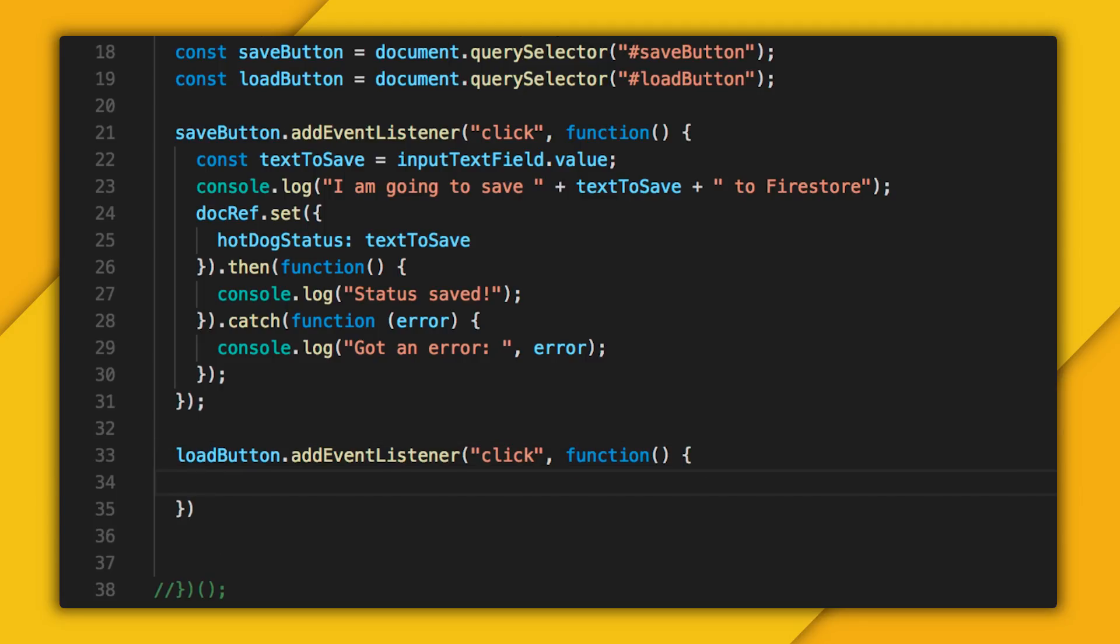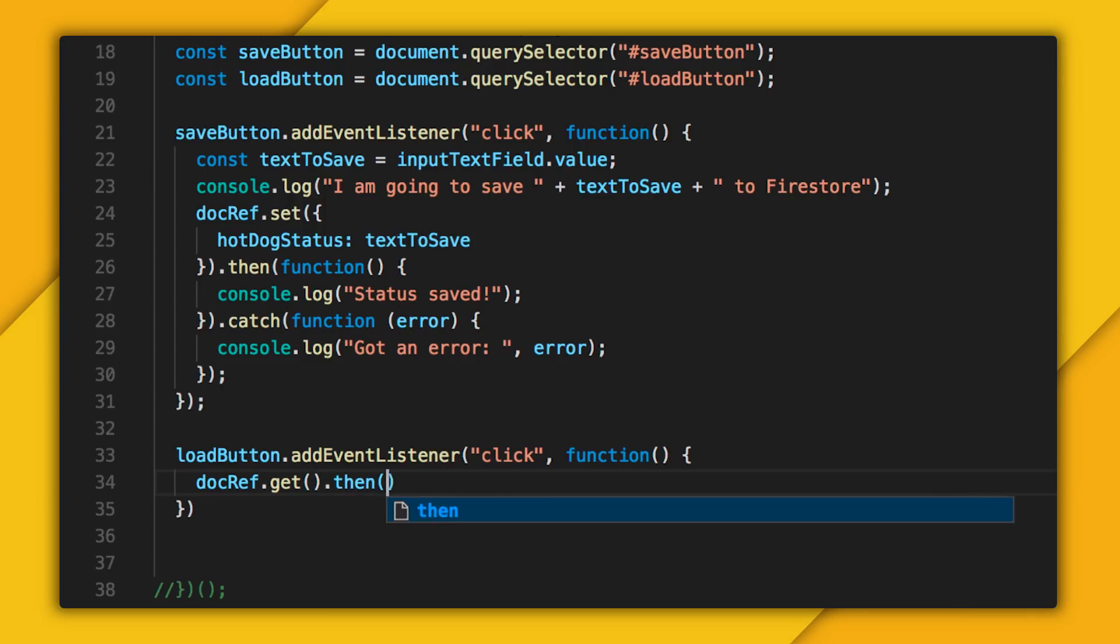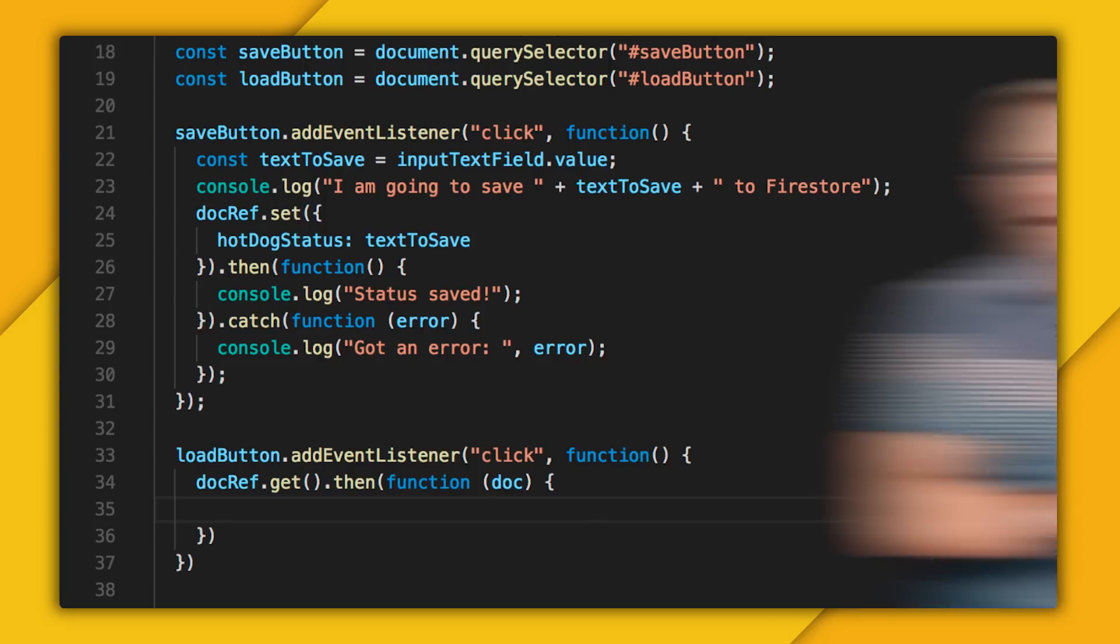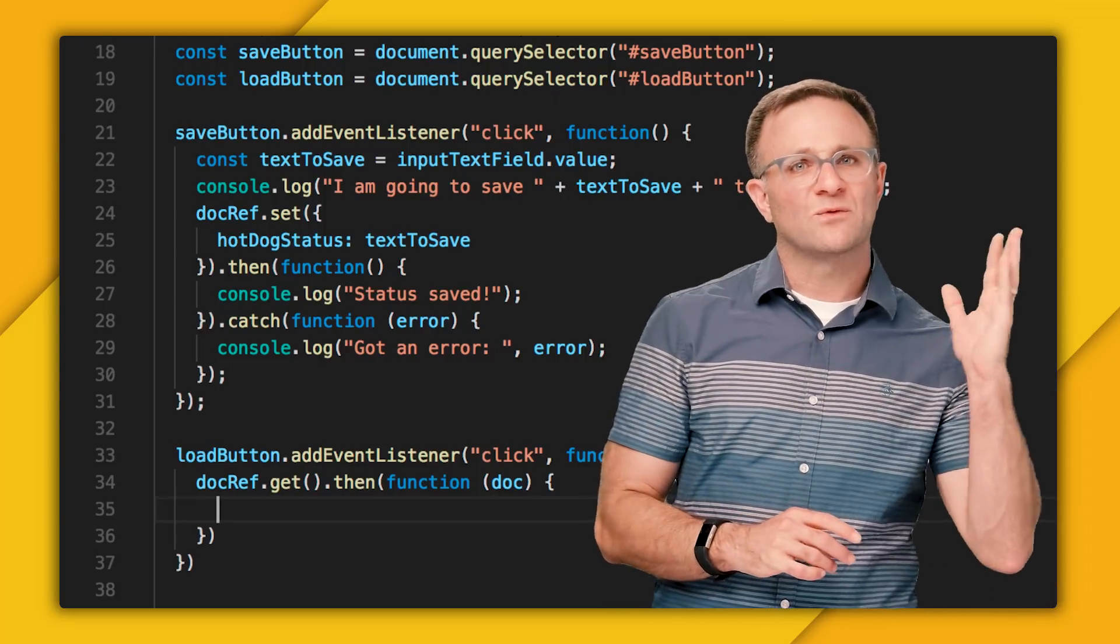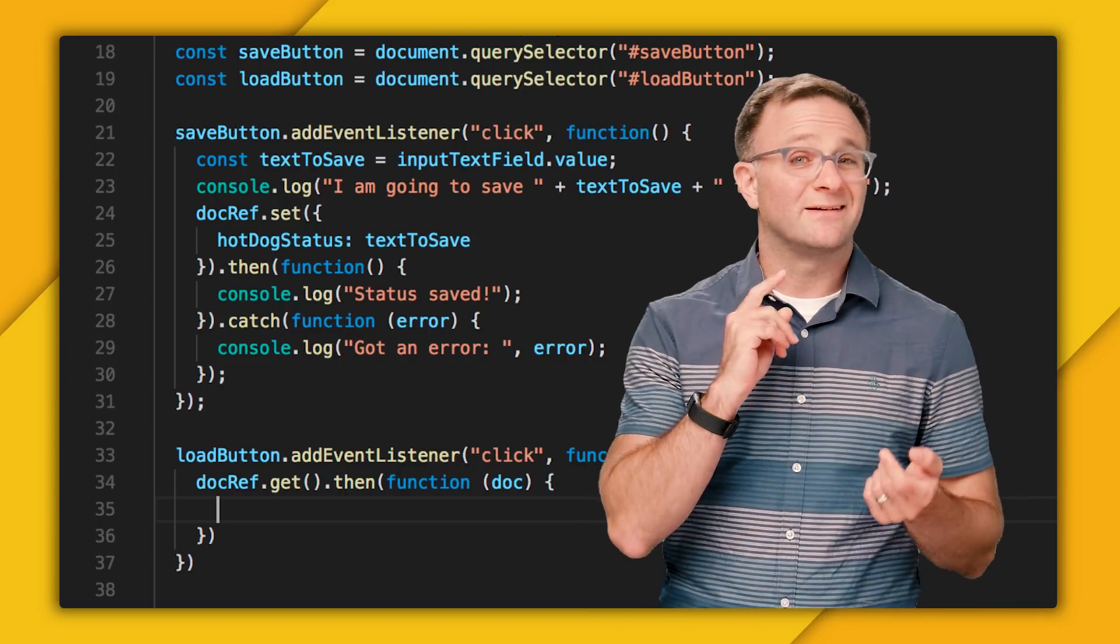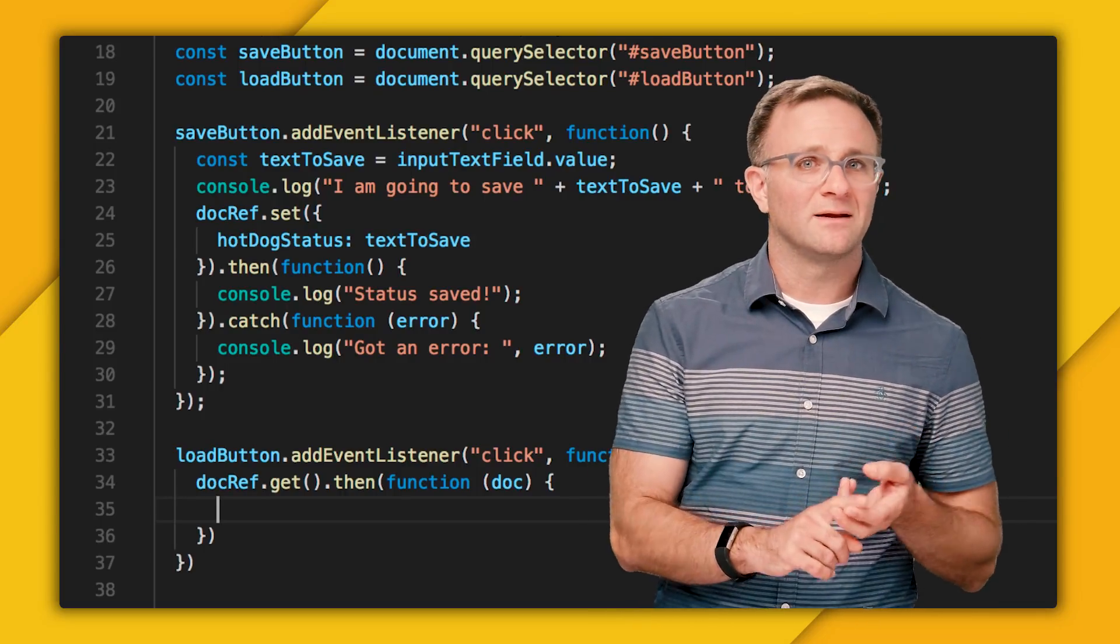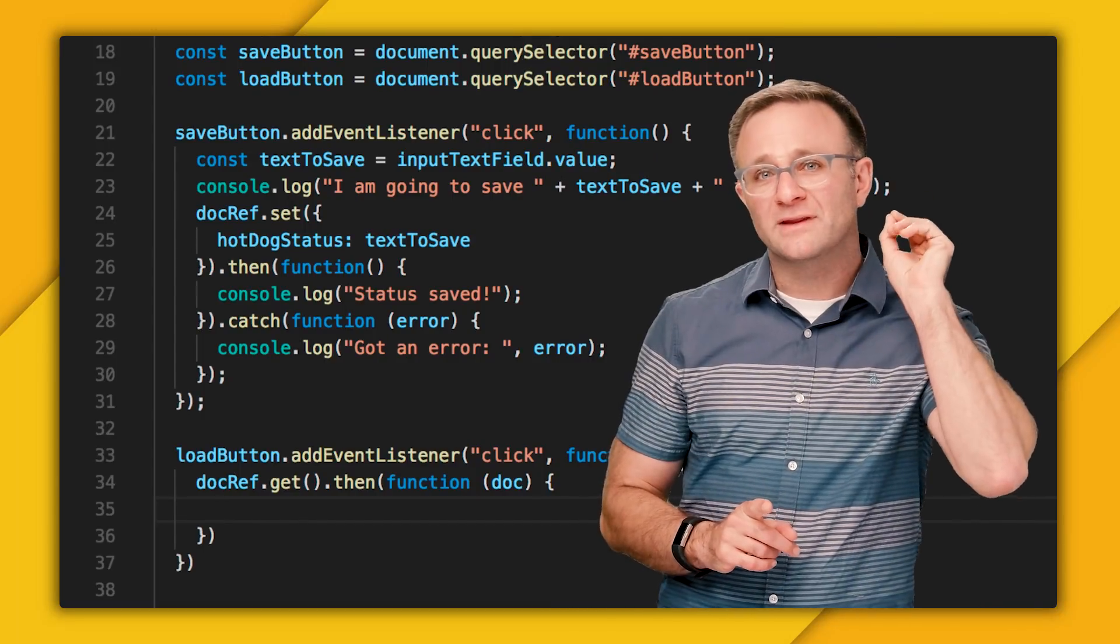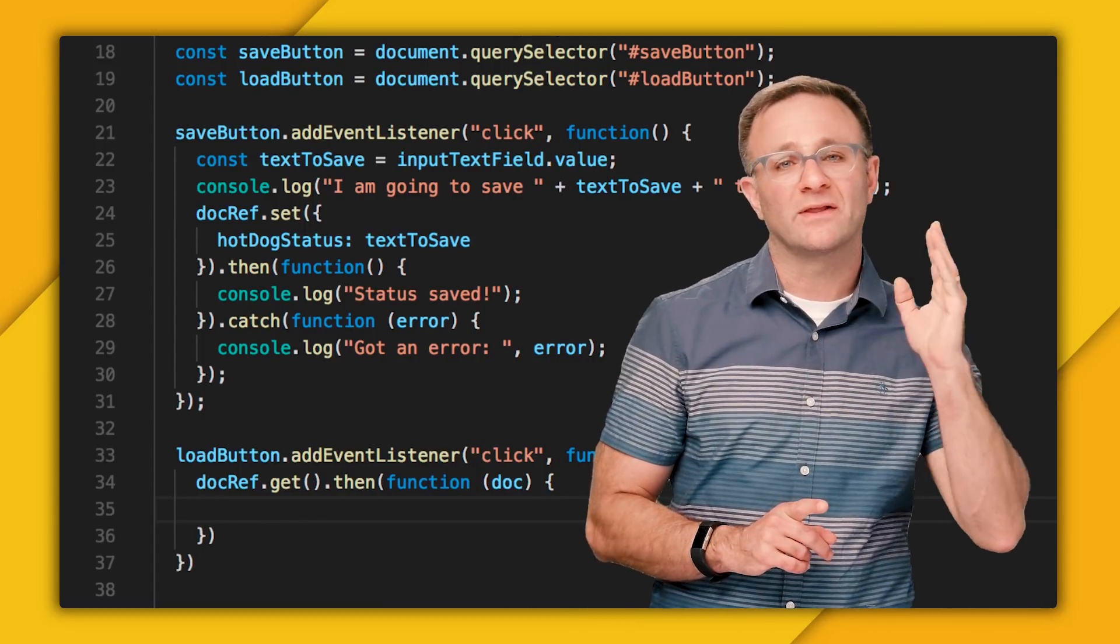Now, getting this function to work is actually quite easy. I'm going to take that same document reference we created earlier, and instead of calling set on it, I'm just going to call get instead. This returns a promise, so I can attach a then callback to it, which will run when this get call is complete. Note that this takes in a document snapshot that I'm just calling doc here. A document snapshot is basically an object that represents your document. You can find out its ID, read some metadata about it, make sure the underlying document it represents really exists, and more importantly, grab the data that it contains by calling data on it.